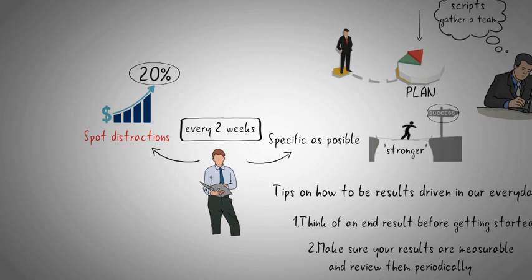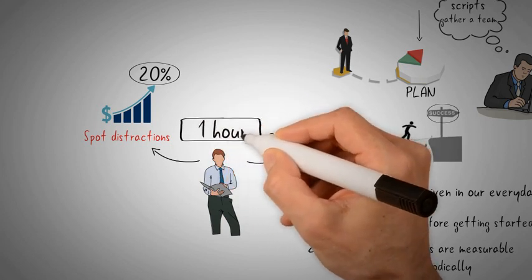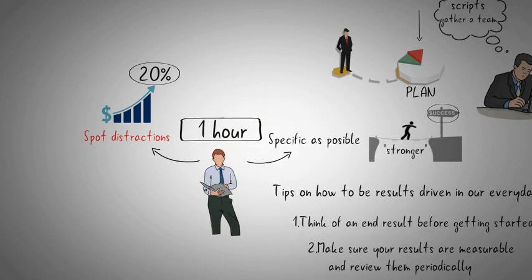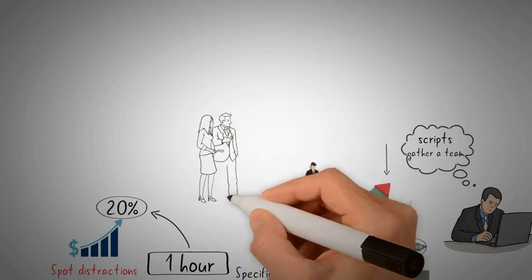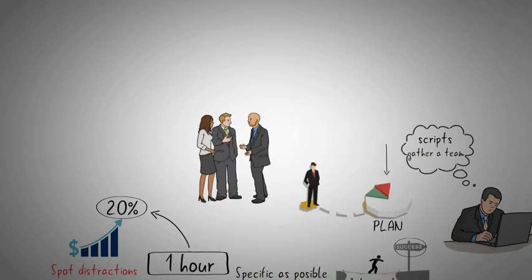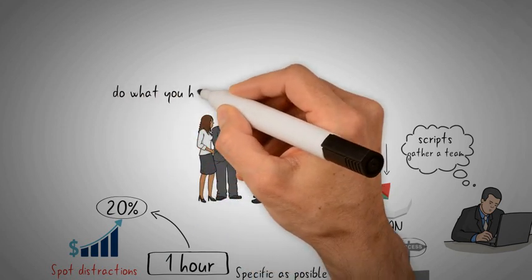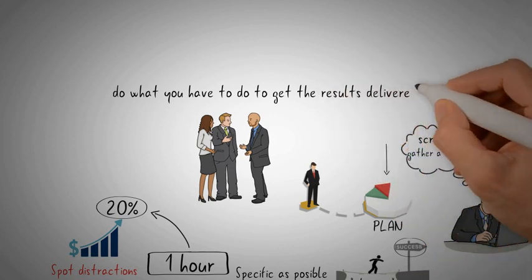If you can complete your work in one hour, do it instead of procrastinating. If reaching an increase in 20% of your sales means you have to go out of your comfort zone and talk to people in order to build your connections, do it. Don't give excuses that will limit your ability to perform. Simply do what you have to do to get the results delivered.